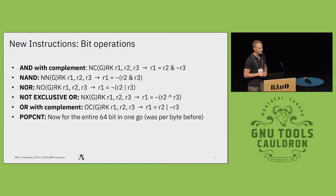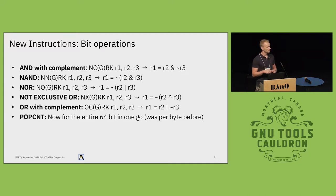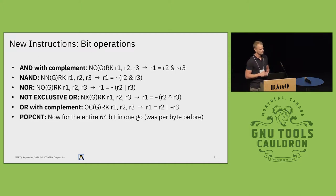We had a population count instruction before, but the version we had with Z14 was only capable of counting bits within eight-bit blocks. If you wanted the population count of a 64-bit value you had to do some shifting and additions to accumulate all those values into one. Now we have an instruction which does all that in one go, and support for that was also straightforward to implement.